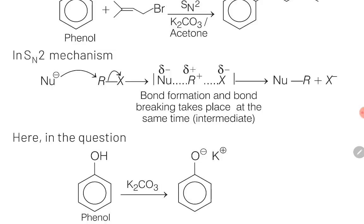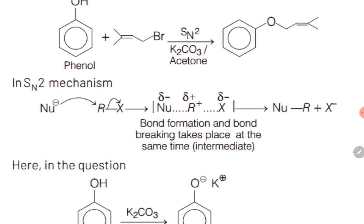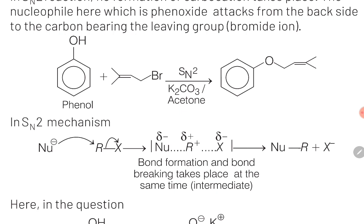Phenol is slightly acidic, and when you react it with K₂CO₃, the CO₃²⁻ is a strong base component. Therefore, H⁺ from phenol is lost, resulting in the formation of the phenoxide ion. This phenoxide ion becomes the attacking nucleophile and attacks the alpha position just next to the double bond, while Br⁻ is the leaving group. The final answer is found by replacing bromine with the O-phenyl (phenoxide) group. With this we have completed this question.